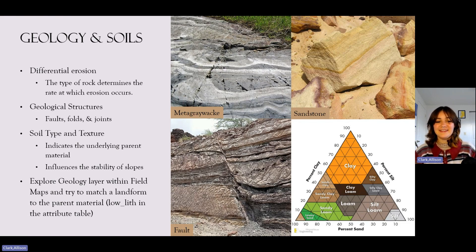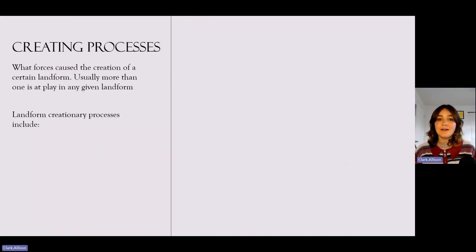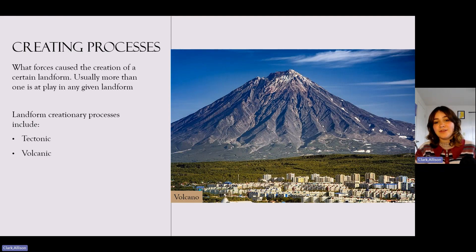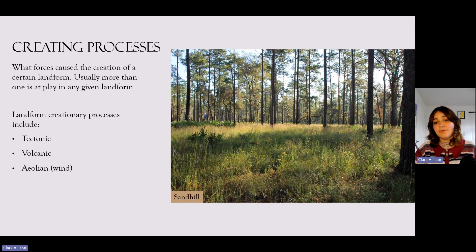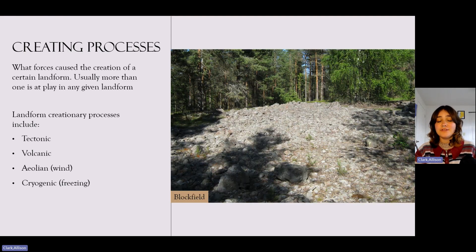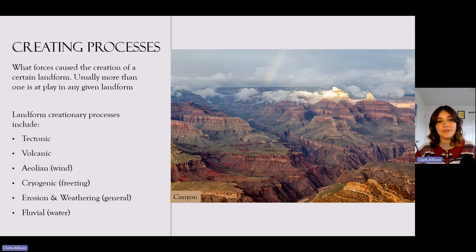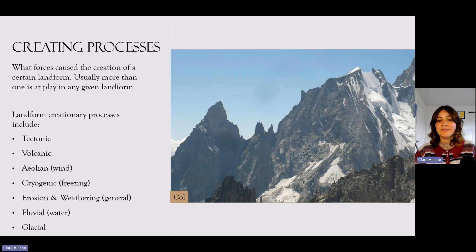Explore the geology layer within Field Maps to try and match a landform to its parent material using the lithology feature in the attribute table. Now, the forces that create landforms — and it's important to remember there's usually more than one at play. These include tectonic plate movement, volcanic activity, aeolian or wind forces such as sand hills, cryogenic or freezing processes creating block fields, general erosion and weathering creating buttes, fluvial or water action creating canyons, and glacial processes creating features such as a col — the lowest point between two peaks.